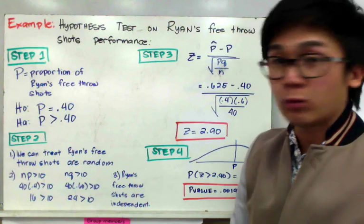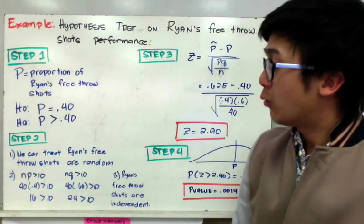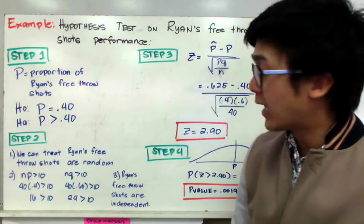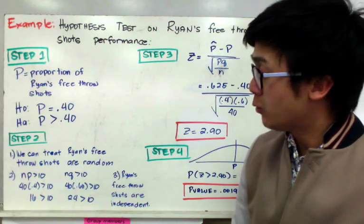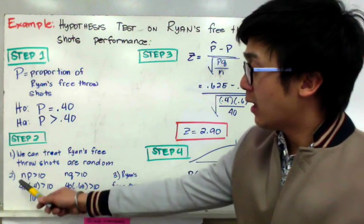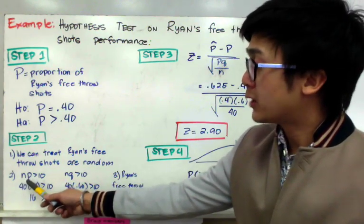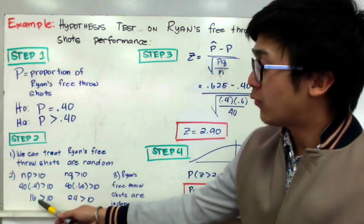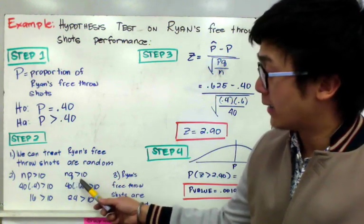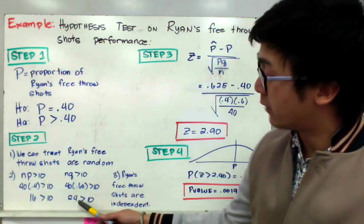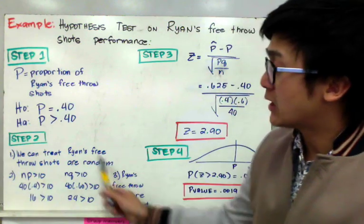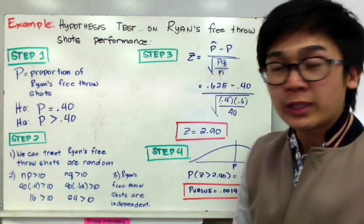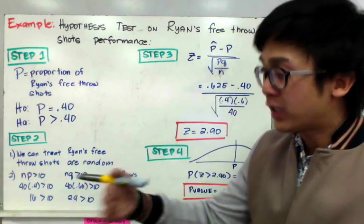For step two, we write our conditions. We treat Ryan's free throw shots as random, since each shot is independently taken. For normality using rule of thumb number two: n times p equals 40 times 0.40 equals 16, which is greater than 10 — satisfied. And n times q equals 40 times 0.60 equals 24, which is also greater than 10 — satisfied. For independence, we treat each free throw shot as independent.